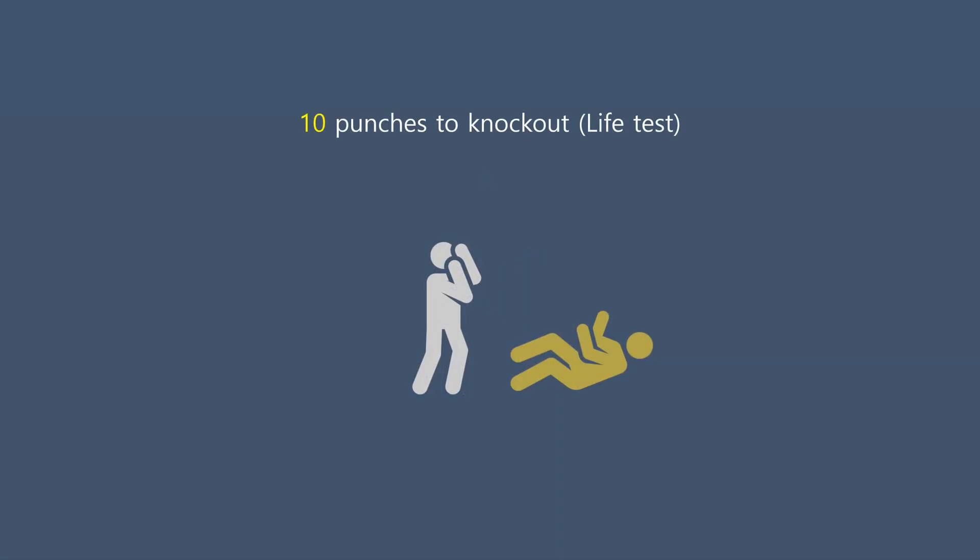How is damage quantified? 10 punches to knock out. Simplified, one tenth of life span was damaged by a punch. This is called a durability test, or life test. Damage quantified, even if it's not a perfect one.